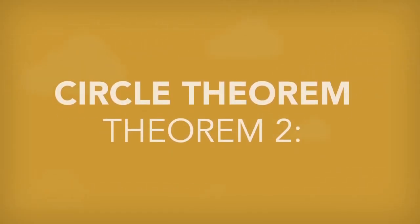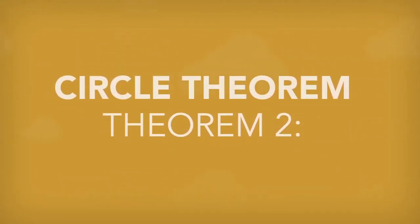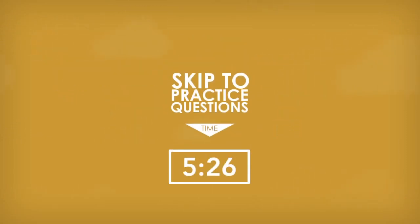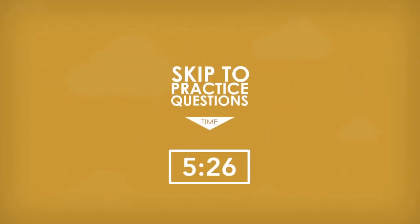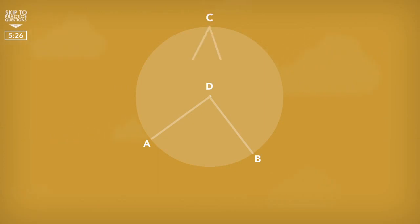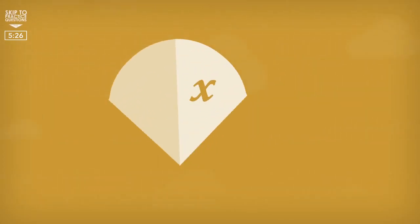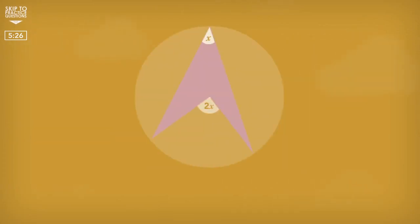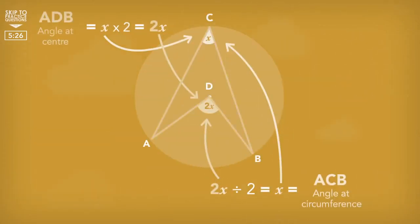Circle Theorems. Theorem 2. This next theorem is quite visual. If there are two radial lines and they are both linked to the same point on the circumference, the angle at the center of the circle is twice the size of the angle at the circumference. So to find the angle at the circumference, you would have to half the angle at the center, and to find the angle at the center, you would have to double the angle at the circumference.